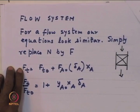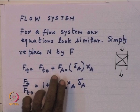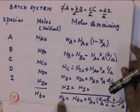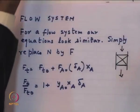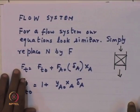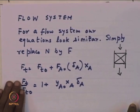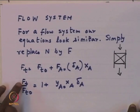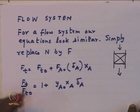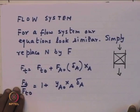So for a flow system, F_T = F_T0 + F_A0·X_A·δ_A, giving F_T/F_T0 = 1 + y_A0·X_A·δ_A — the same form as N_T/N_T0 for a batch system. Whether it is N_T/N_T0 or F_T/F_T0, the right-hand side does not change, because that is coming from stoichiometry.